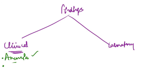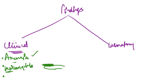The second finding, which is very specific to iron deficiency anemia, is koilonychia. In koilonychia, the nails become flat and shaped like spoons — hence called spoon-shaped nails. This is a hallmark finding of iron deficiency anemia. The third clinical finding is pica — an irresistible desire to eat non-nutritious substances, such as soil or metal objects, which is a manifestation of iron deficiency.